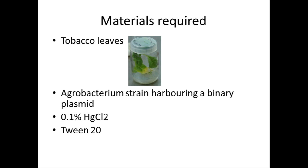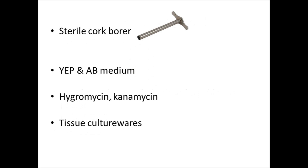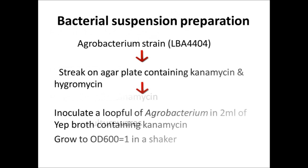The materials required are: tobacco leaves, Agrobacterium strain harboring a binary plasmid, 0.1% mercuric chloride, Tween 20, sterile cork borer, YEP medium and MS medium, hygromycin, kanamycin, and tissue culture wares.